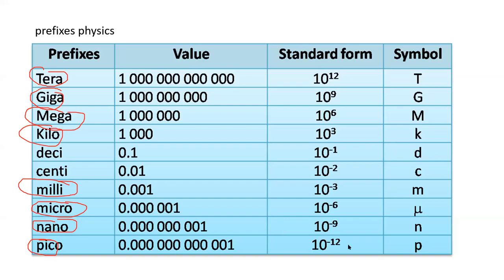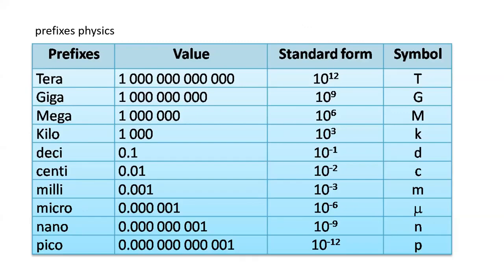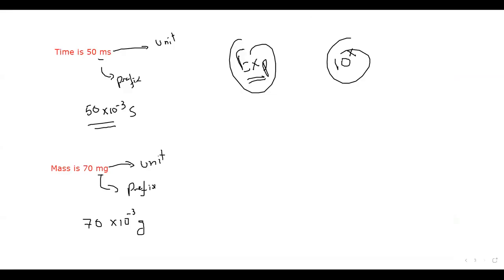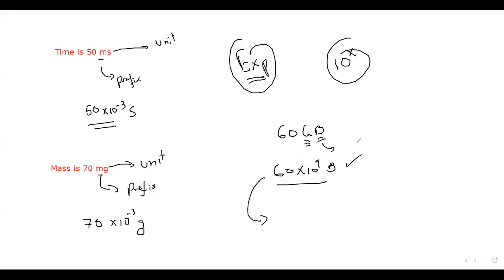A student asks: do we need to give both the standard form and the converted value? If it is in standard form, that is also correct. For example, 60 GB — gigabytes — you can write 60 × 10⁹ bytes and that is also right. You don't have to further convert into a normal full number if you use the standard form value.